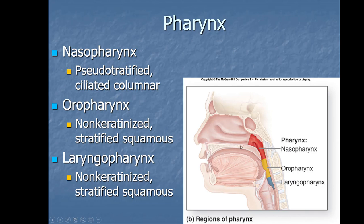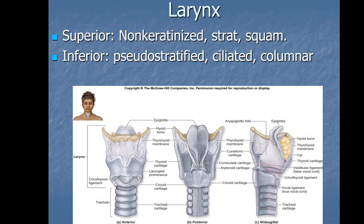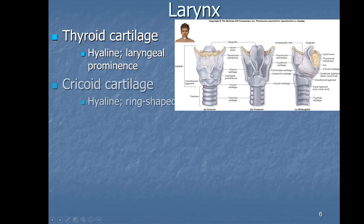The larynx has a lot going on and can be viewed from the front, back, and side. The upper part is lined with stratified squamous epithelium, and as you go lower it transitions back to pseudostratified ciliated epithelium. The large strip of cartilage is the thyroid cartilage, which is hyaline cartilage. The prominent bump in the front is called the laryngeal prominence, also known as the Adam's apple. Beneath that is the cricoid cartilage — a ring that looks narrow in front but gets very wide in the back — also hyaline cartilage.